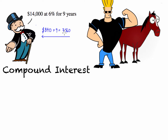The way that compounding interest differs from this is that the interest calculation resets every time period. Let's go through it from first principles. I'm borrowing $14,000 from the Monopoly man. In the first year that I borrowed my $14,000, I'm going to have to pay him back 6% of it, which is 6 over 100 — that's equal to $840.